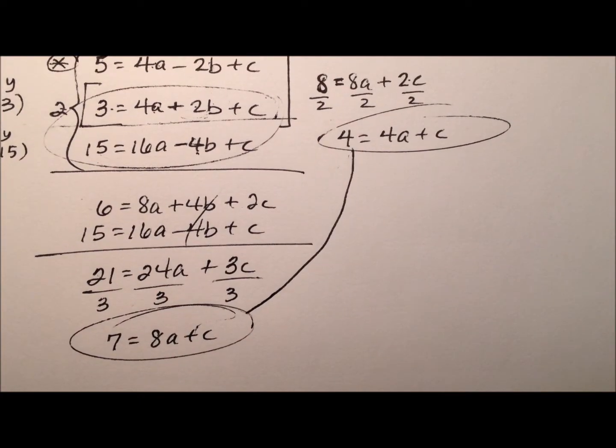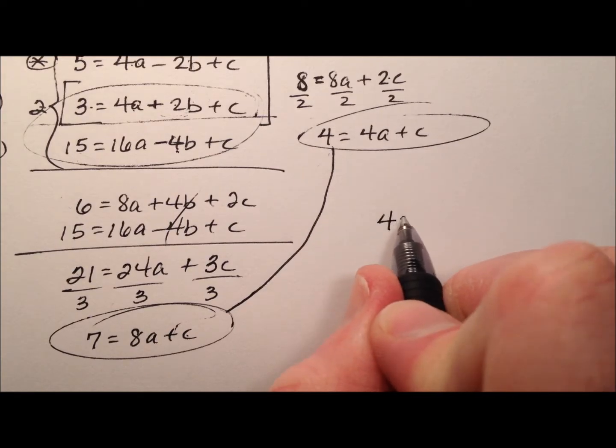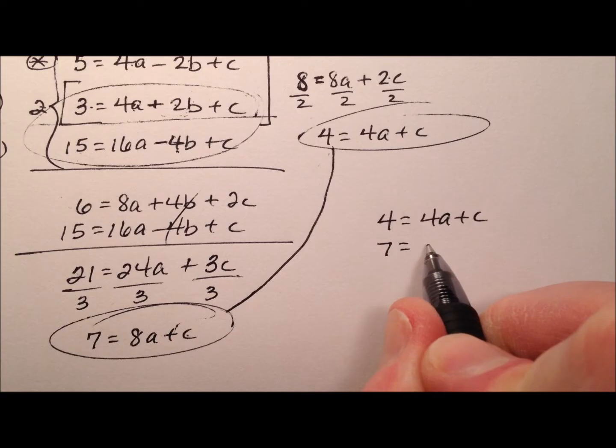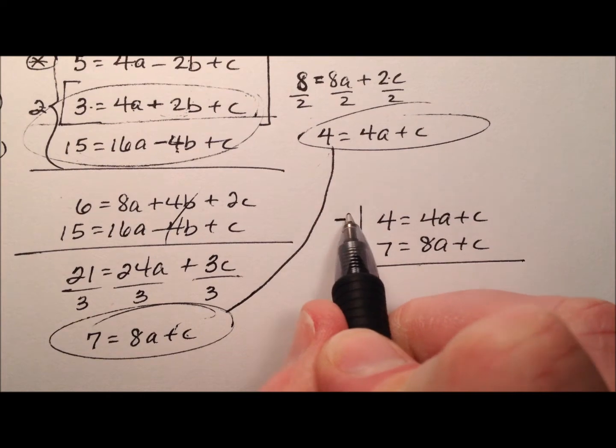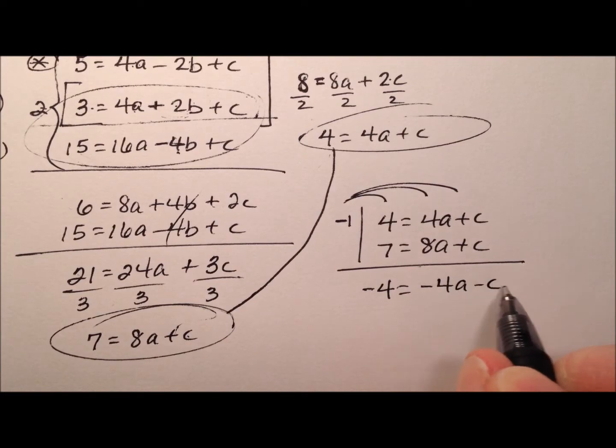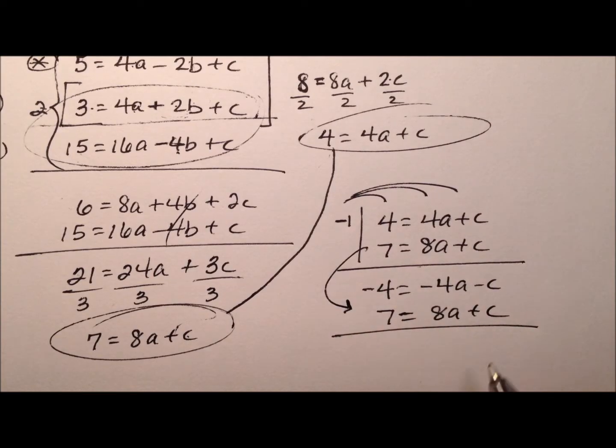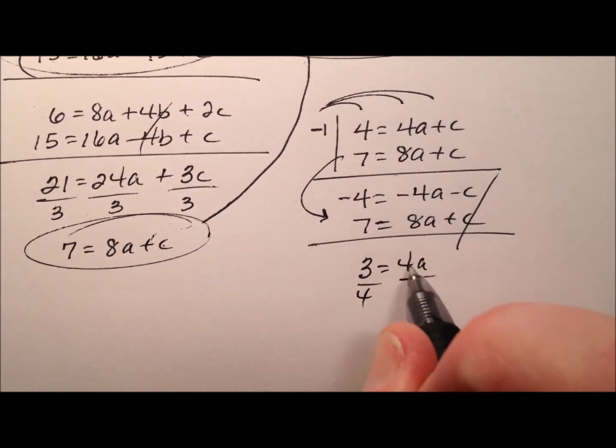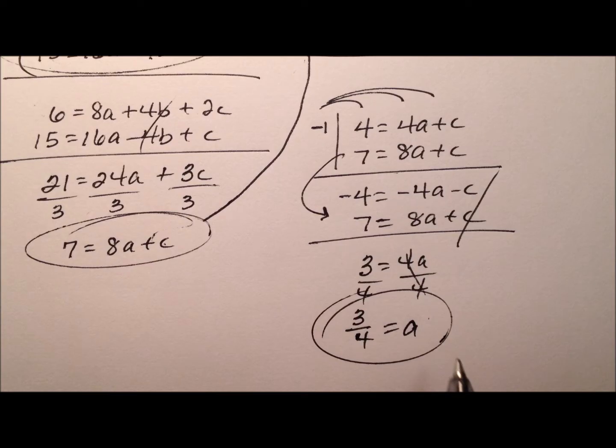Now let's take a look at the two equations that we have. We have this equation with just a and c, and this equation with just a and c. Let's stack them. So 4 equals 4a plus c, and 7 equals 8a plus c. If we multiply through by a negative 1 on this first equation, we have minus 4 equals negative 4a minus c. I can write this equation here unchanged. The c's cancel. 3 equals 4a. So your a is going to be 3 fourths.